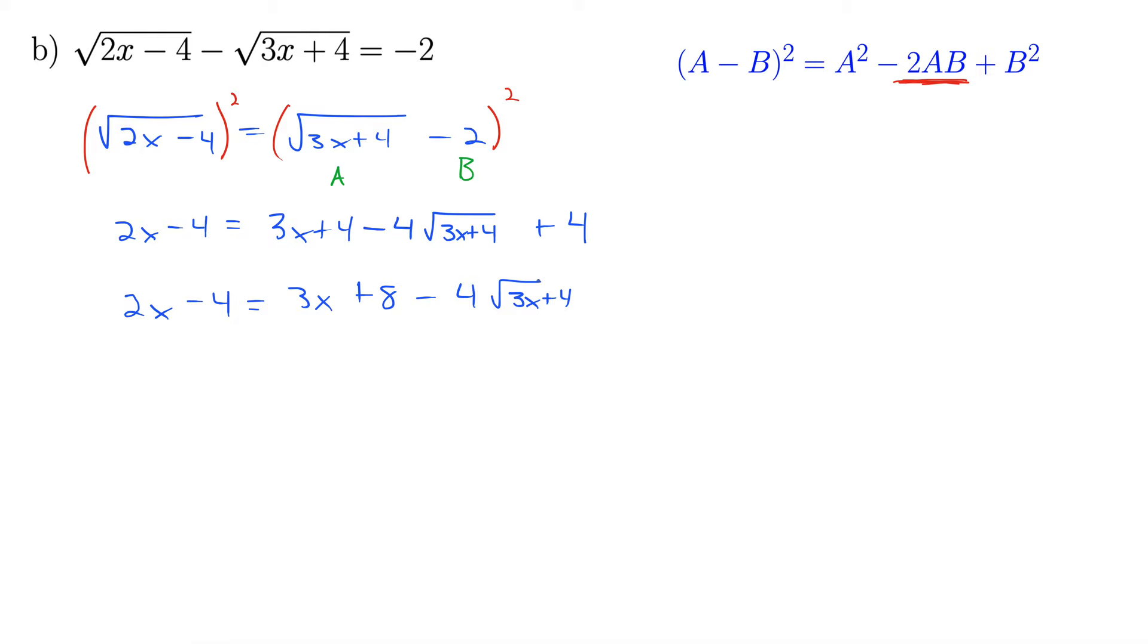Next, we want to isolate the square root on one side of the equal sign. So I'm going to subtract off 3x from both sides and subtract 8 from both sides. This gives us minus x minus 12 equals negative 4 radical 3x plus 4. Now right now I have a lot of negatives floating around that I don't really want. So I'm just going to divide both sides by negative 1 to get rid of all these negatives. This gives x plus 12 equals 4 radical 3x plus 4.